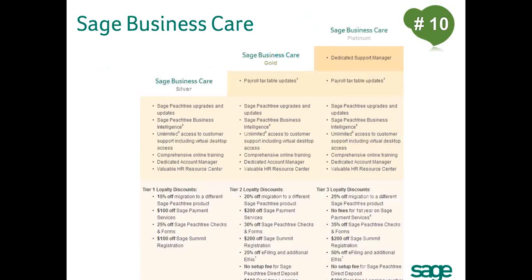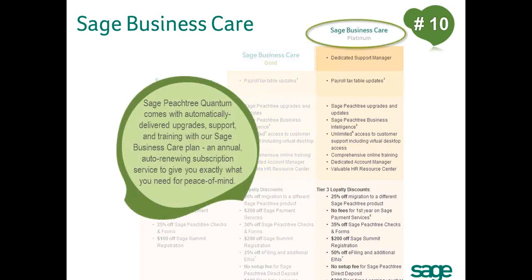That brings us to number ten. This slide says Sage Business Care, but what it should really say is the people behind the product. Sage is committed to providing an extraordinary customer experience, and we cannot do that without people. That is one of the primary benefits of Sage Business Care: a dedicated support manager who will get to know your business and help you maximize the value in Sage Peachtree Quantum. Business Care includes a Sage Peachtree Business Intelligence license so you can instantly take advantage of business intelligence. Sage Business Care also includes unlimited access to U.S.-based technical support, comprehensive training opportunities, and automatic updates and upgrades for both payroll tax and Sage Peachtree Quantum, so you know your software will not become out of date or obsolete. With this high level of support and access to services, you can get up and running quickly using Sage Peachtree Quantum.